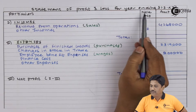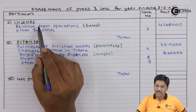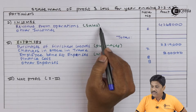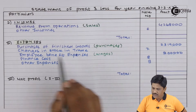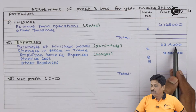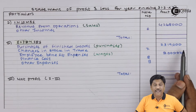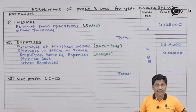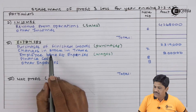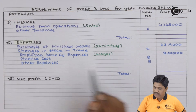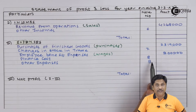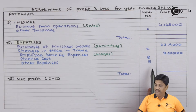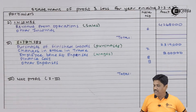Statement of profit and loss for the year ended 31st March 20X1. In the income part: revenue from operations — sales is a single amount, so it is directly written. Other incomes will be recorded in note number 6. Purchases of finished goods — that is purchases — 23,19,000. Changes in stock in trade will be note number 7. Employee benefit expenses have only wages, so directly written. Finance cost will be note number 8. Other expenses will be taken care of in note number 9. In this way the format is complete — income minus expenses will provide net profit.